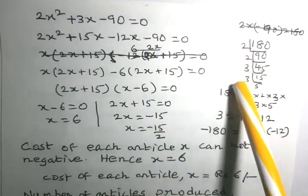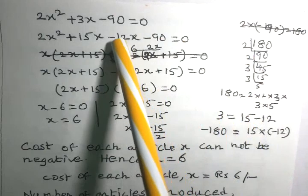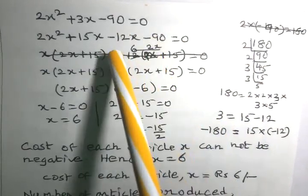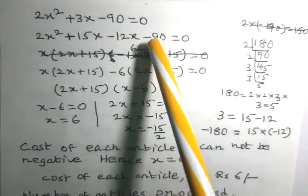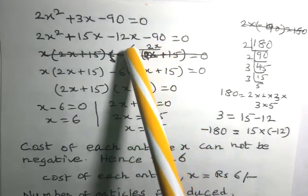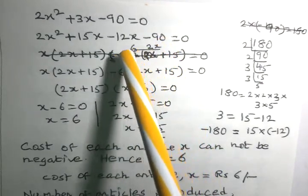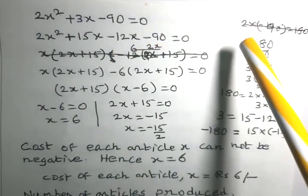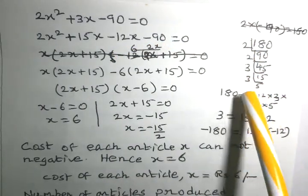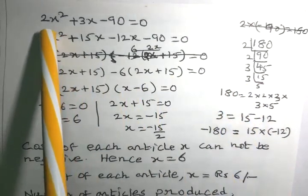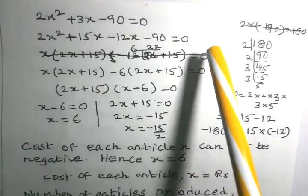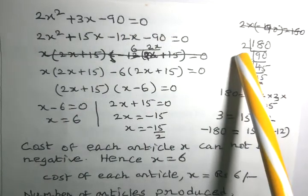This quadratic equation can be solved by the factorization method, using the quadratic formula, or by completion of the square. Here we use the factorization method. Multiplying 2 by minus 90 gives minus 180, so we find the prime factors of 180.